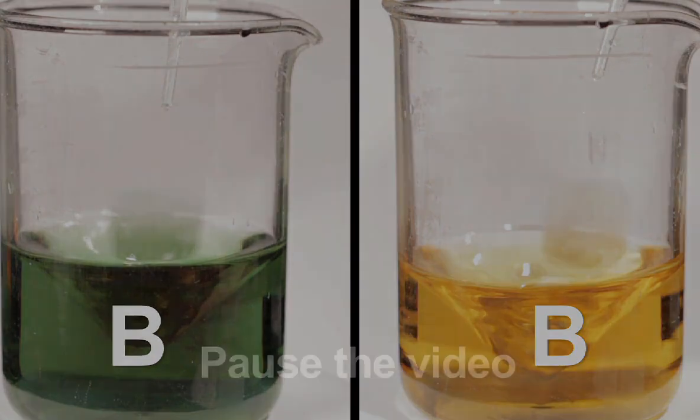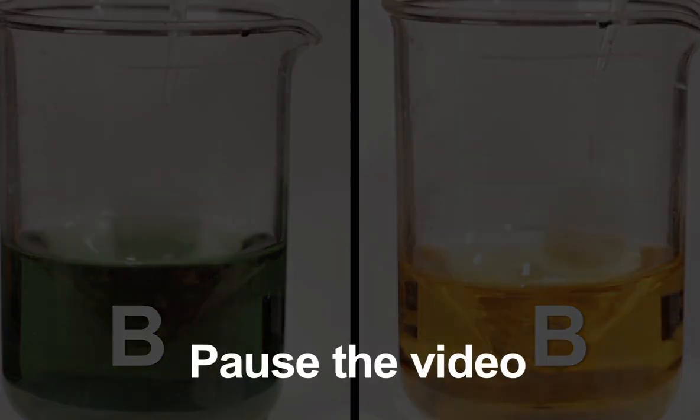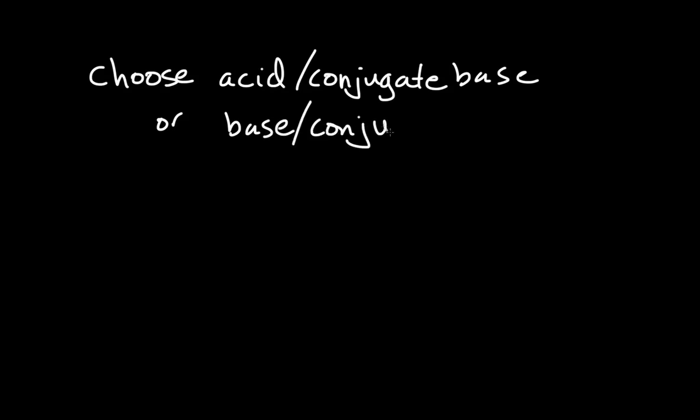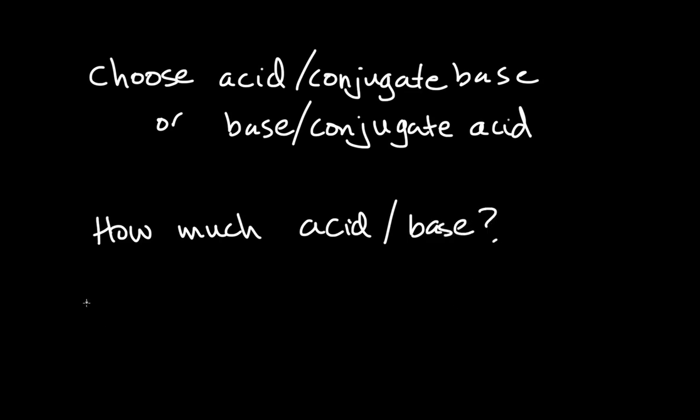In designing a buffer solution, you have a lot of choices to make. Pause the video and suggest a few factors you should consider when designing your first buffer. First, you have to choose your specific acid conjugate base or base conjugate acid pair. Then you have to decide how much of the weak acid or base you want to use. Finally, you have to decide how much of the conjugate species you want to have at equilibrium. Each of these decisions affects the pH and buffer capacity of your final buffer.